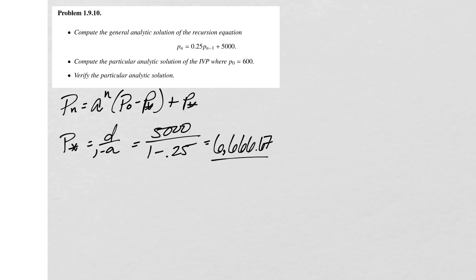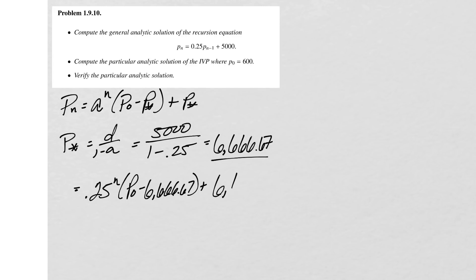Now we can substitute that into our general analytic solution. So we have 0.25 raised to the n, times (p0 minus 6,666.67), plus 6,666.67. This is our general analytic solution — it's general because we've left p0 in there. Once we substitute an initial condition in, we'll have a particular analytic solution. Step one is done.